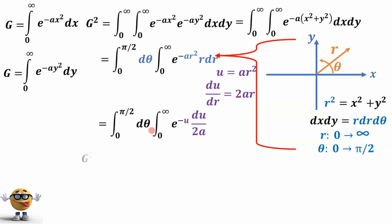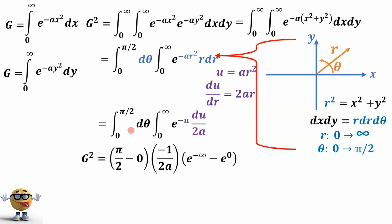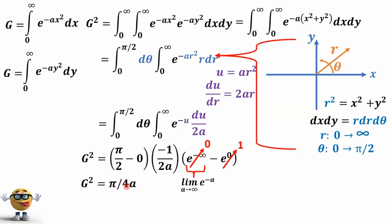At this point we can evaluate. The integral of dθ is just theta, evaluated from zero to pi over two, giving pi over two minus zero. The integral of the exponential is just itself, with a negative sign, pulling 2a out as a constant. We evaluate from zero to infinity — mathematicians would note this is really a limit as some number goes to infinity. That term goes to zero, this is one, and therefore this whole thing simplifies to pi over 4a.